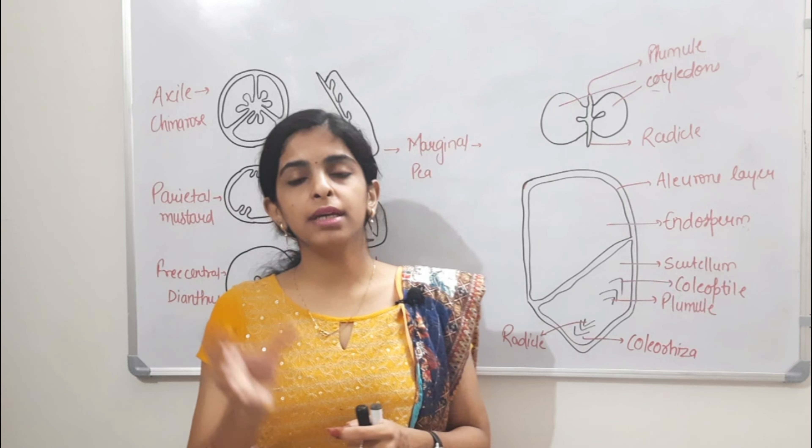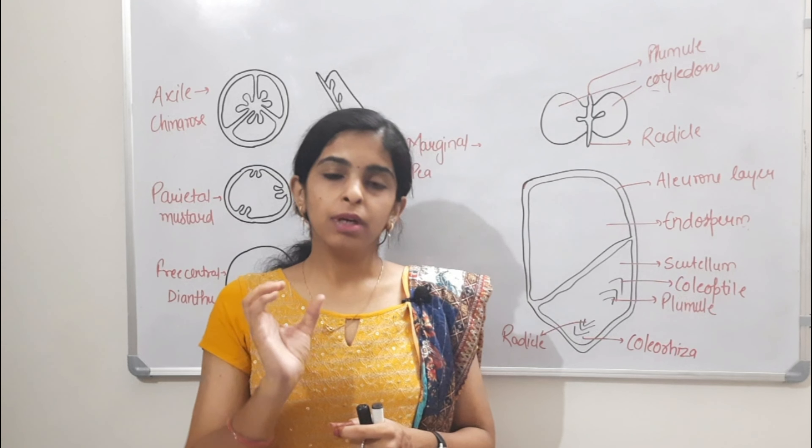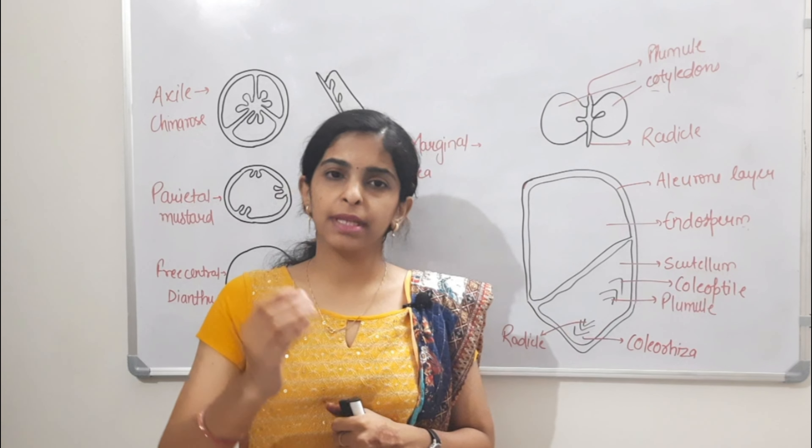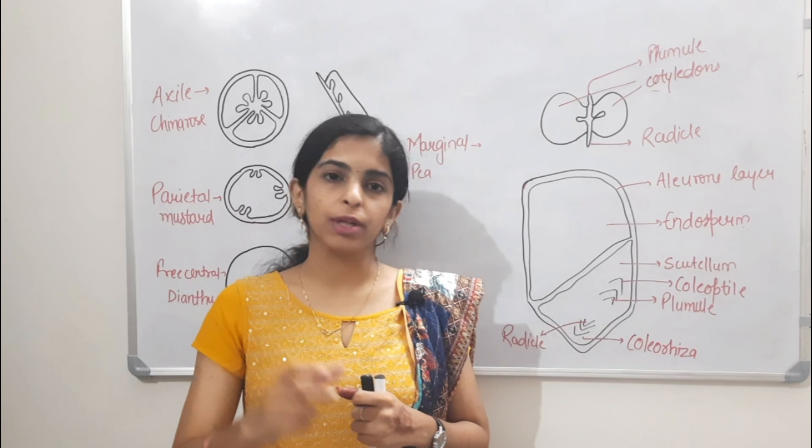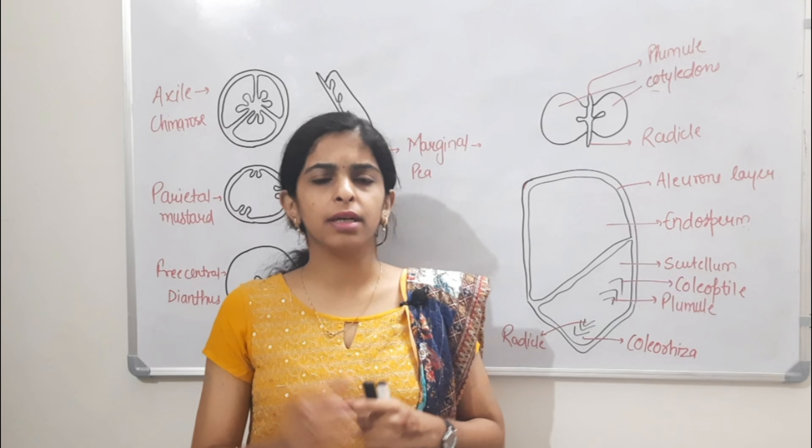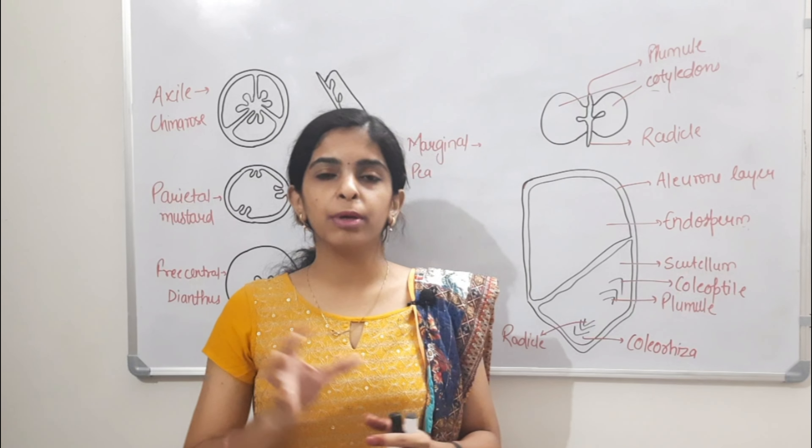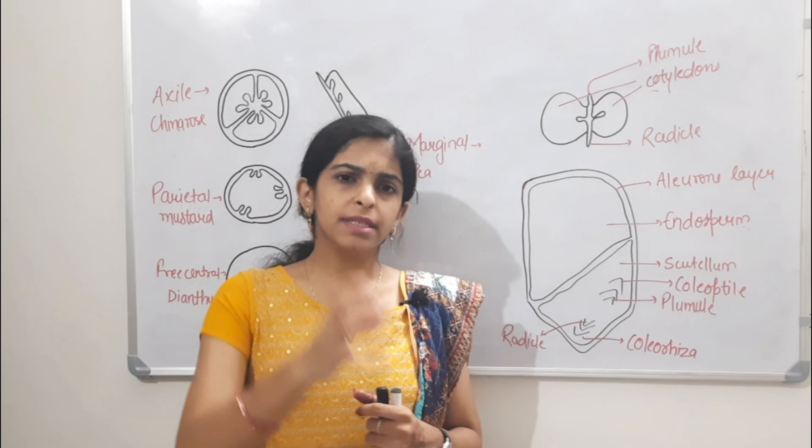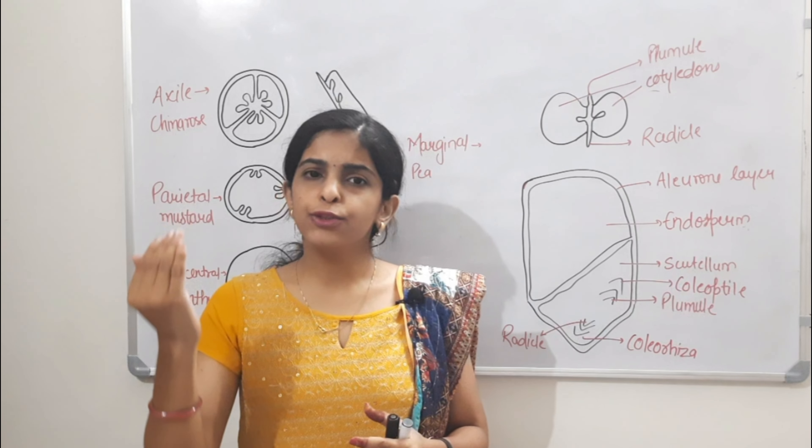Gynosium has a stigma which is receptive. It works with the pollen grains through pollen tube formation. And ovary is the ovary sac where embryos are present with fusion, and what will be made is seed and fruit production.